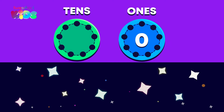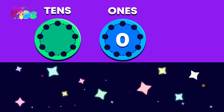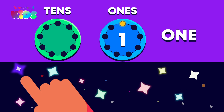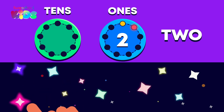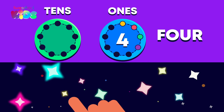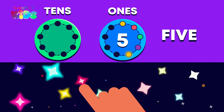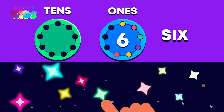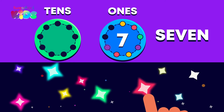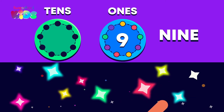How many stars are flashing now? Let's count them all: 1, 2, 3, 4, 5, 6, 7, 8, 9.